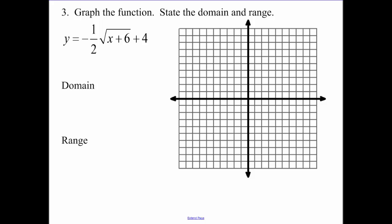Okay, the next function. If a is positive, your graph looks like this. But in this case, our a is negative. So it's going to look something like that. Let's get our translations. Plus 6 is 6 to the left. Plus 4 is up 4. So I put that point down.